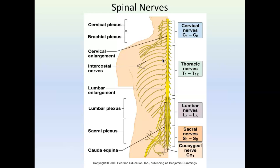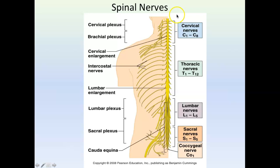There are 31 pairs of spinal nerves, all attached to the spinal cord. You have eight cervical nerves C1 through C8, 12 thoracic nerves T1 through T12, five lumbar nerves L1 through L5, five sacral nerves, and then one coccygeal nerve. This really follows the number of vertebrae we have, except for the cervical region, because there's a nerve that comes above C1 and a nerve that goes below C1. Usually all the nerves exit below the vertebra — so T1 exits through the intervertebral foramen under T1 — but in the cervical region there's one above C1 and below C1, which is why there's an extra cervical nerve.